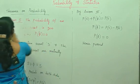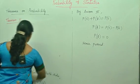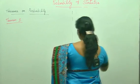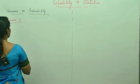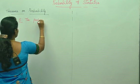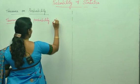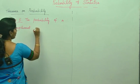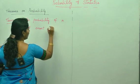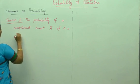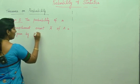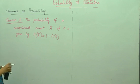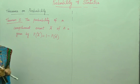Second theorem: The probability of a complement event A-bar of A is given by P(Ā) = 1 - P(A). So the probability of a complement event A-bar of A is given by P(Ā) = 1 - P(A).